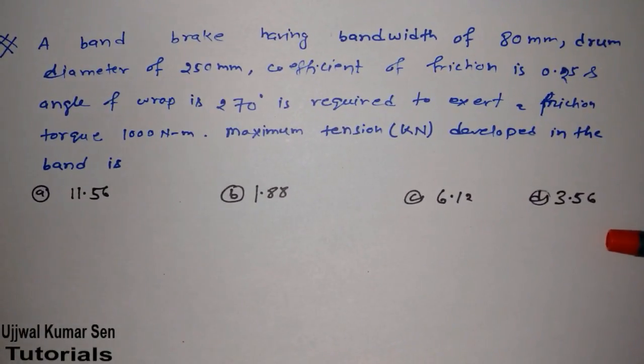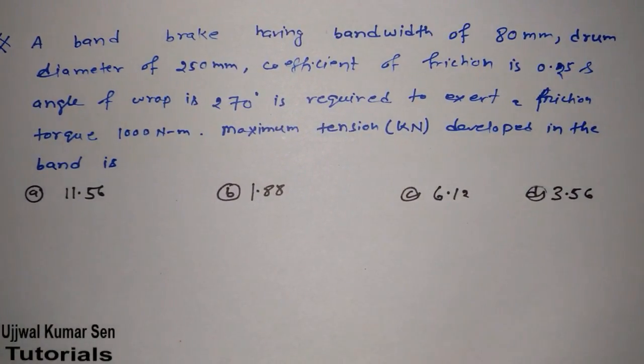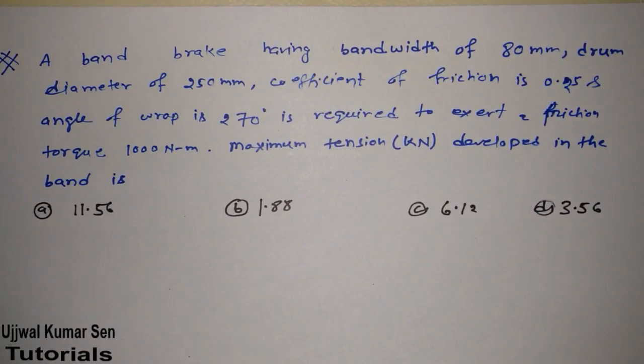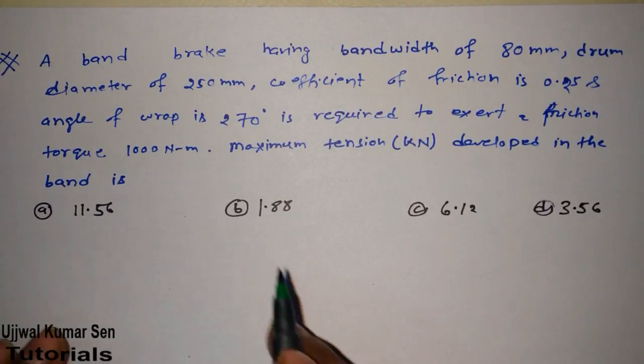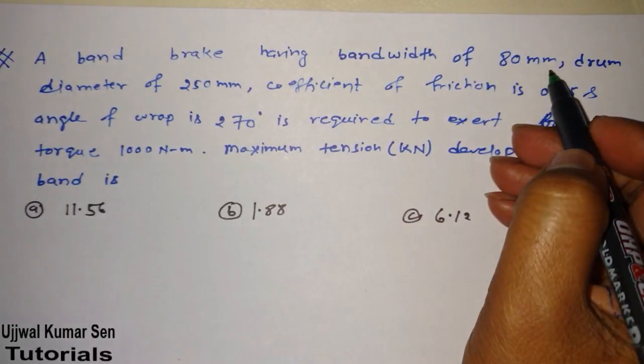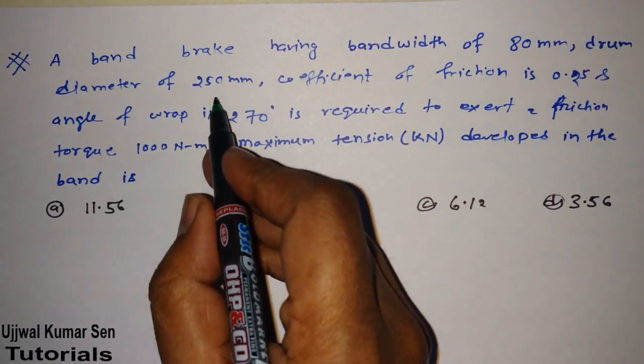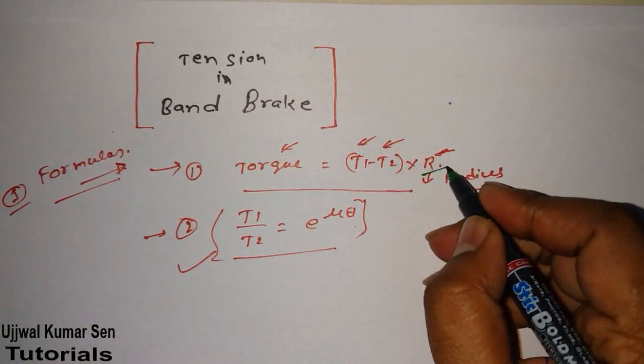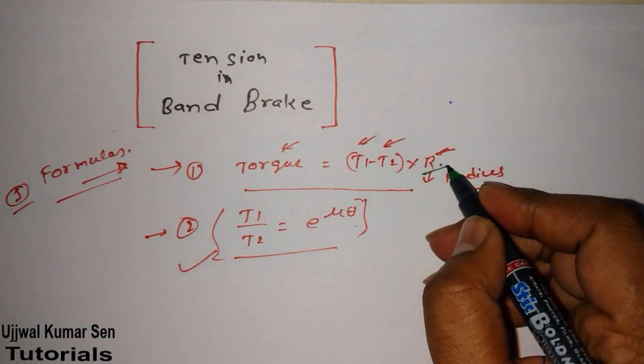And these are two important formulas of band brake. Now let's go for that question, which question has been asked in previous year, GATE previous year. So the question is right now in front of you. I hope you can read it. So in this question, we have given a band brake having bandwidth of 80 mm. Drum diameter is this. So I have shared with you what is R basically. Radius of the drum.